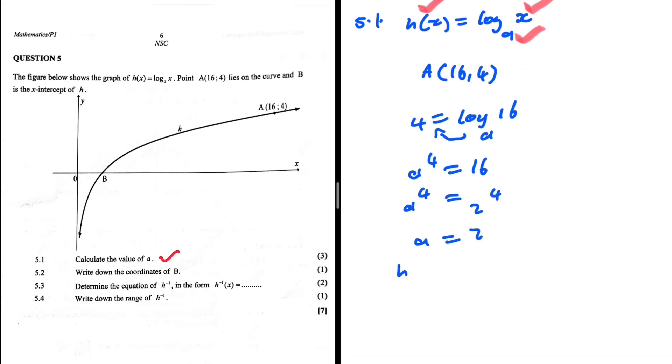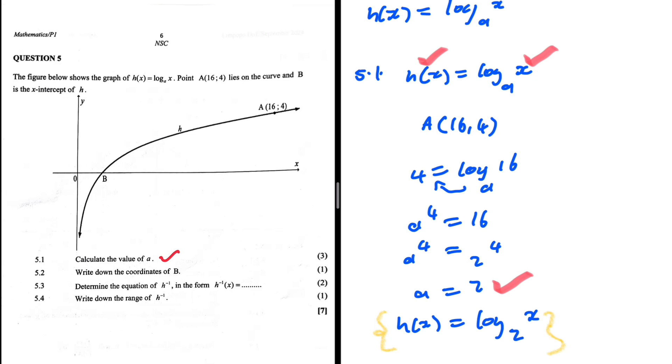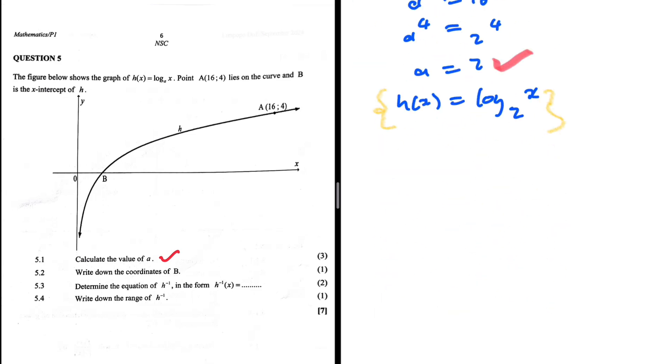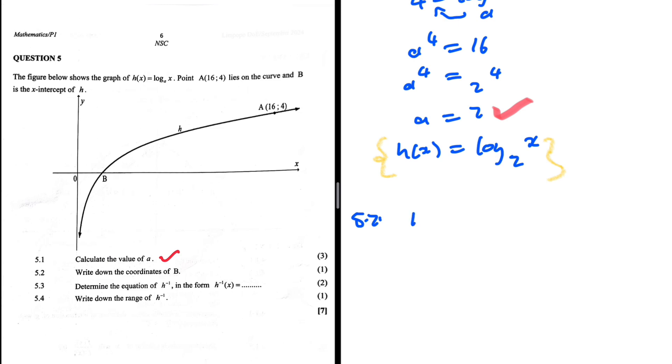Now we know that h(x) = log_2(x). We don't have to write this, but we'll need it moving forward. For 5.2, write down the coordinates of B. We now know h(x) = log_2(x), and we need the coordinates of B. B is the x-intercept.